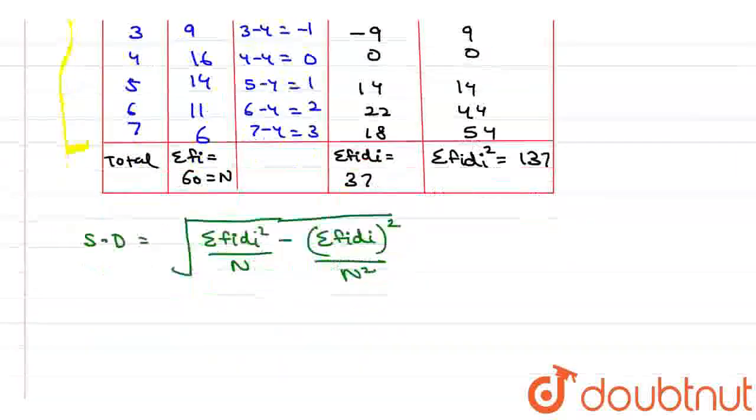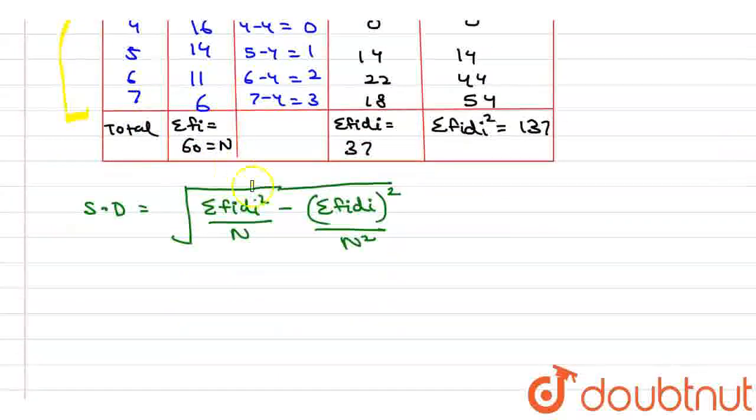Now summation of f_i*d_i square equals 137. So from here we can find the value of all these things. We can find the value of this, this, this and this.